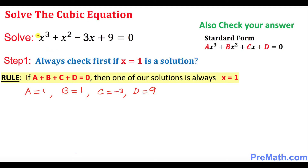In our case, a = 1, b = 1, c = -3, and d = 9. If you add them up, that turns out to be 8, which is not equal to 0. That means x cannot equal 1, so we're going to rule it out.